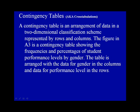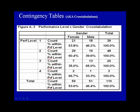A contingency table is an arrangement of data in a two-dimensional classification scheme represented by rows and columns. Figure A3 is a contingency table showing the frequencies and percentages of student performance levels by gender. The table is arranged with the data for gender in the columns and the data for performance level in the rows.